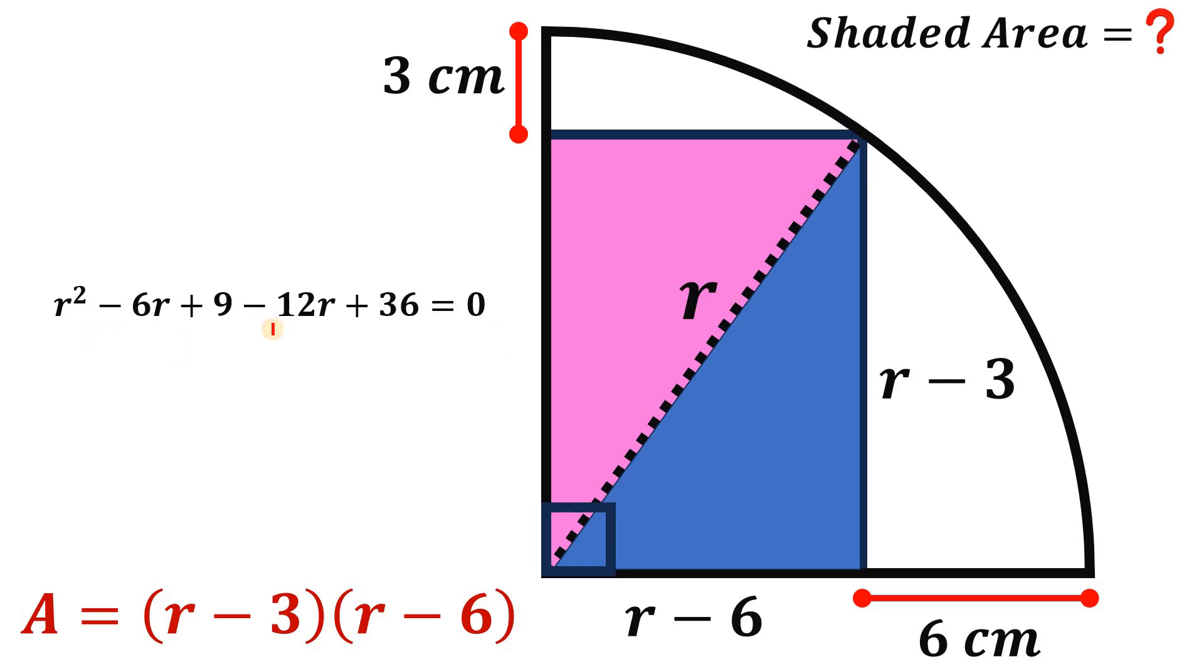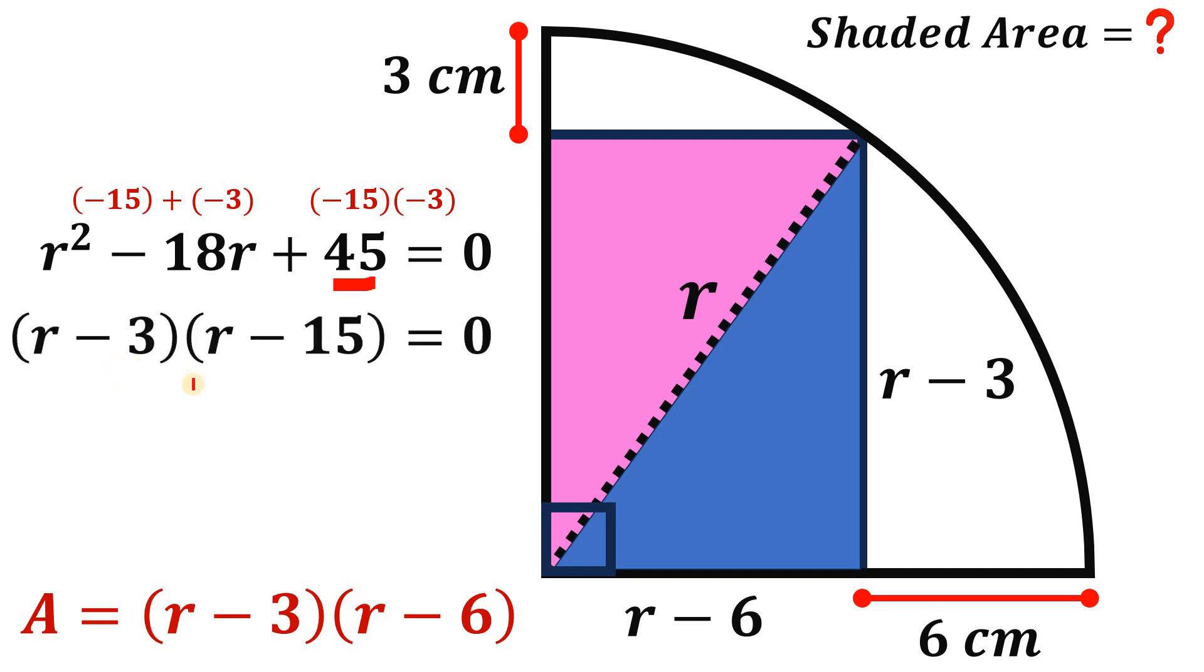Now, let's combine like terms. Negative 6R minus 12R, this is just negative 18R. And the 9 plus 36 is just 45. So let's focus on this quadratic equation in terms of R. And this quadratic equation is not hard to factor because if we think of this 45, 45 is just negative 3 times negative 15. And if we add negative 15 and 3, we have negative 18.